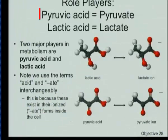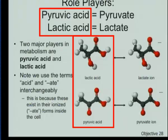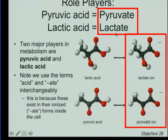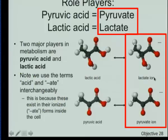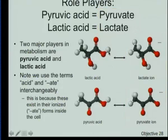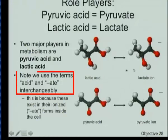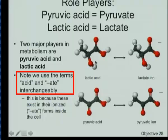Our next role players are pyruvic acid and lactic acid. Very often you'll hear them referred to as pyruvate and lactate. The difference is that when dissolved in body water, they donate a hydrogen ion and become a lactate ion or pyruvate ion. When they have the hydrogen attached, we call it lactic acid or pyruvic acid. When they release the hydrogen ion, we call them pyruvate and lactate. We commonly use them interchangeably — it's not a problem.